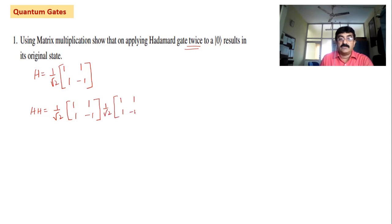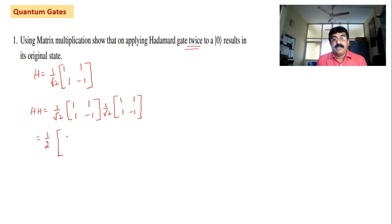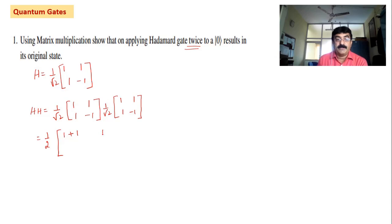You can pause this video and find the answer yourself — you know how to multiply matrices. That gives us 1/√2 × 1/√2. First row into first column: 1×1 + 1×1 = 2. First row into second column: 1×1 + 1×(-1) = 0. Second row into first column: 1×1 + (-1)×1 = 0. Second row into second column: 1×(-1) + (-1)×(-1) = 1+1 = 2.